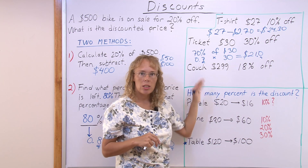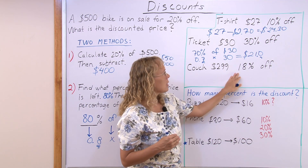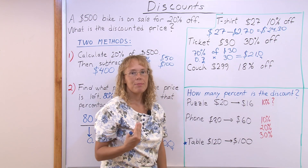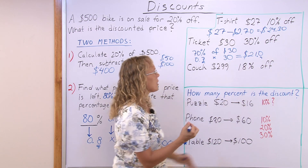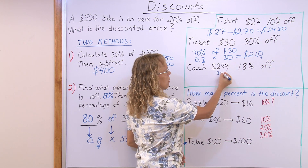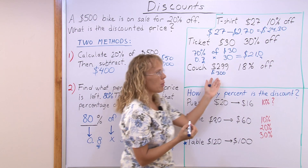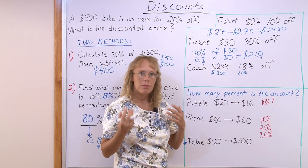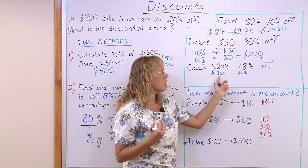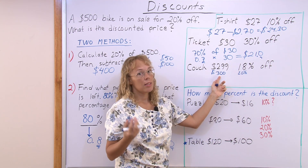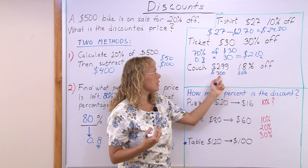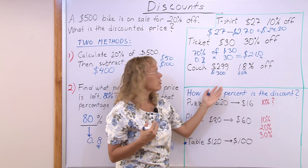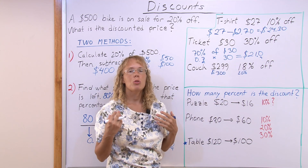A couch that costs $299 is discounted — it's 18% off. Now here you could estimate if you're in a store: round these numbers, so this is about $300 and about 20%. What's 10% of 300? That's $30. So 20% is double that, or $60. About $60 is taken off this price, so it's going to be about $240.